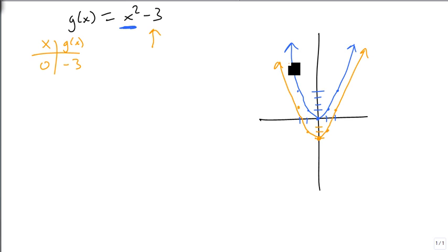That's what this minus 3 outside of the square does. And we could also show, let's just want to do h of x equals x squared plus 4.